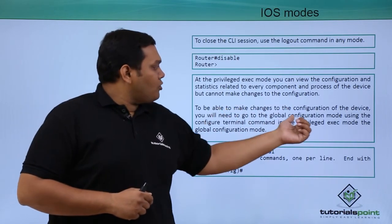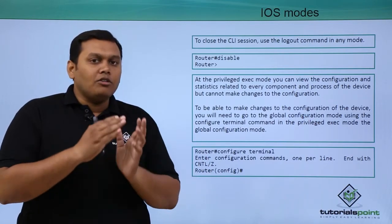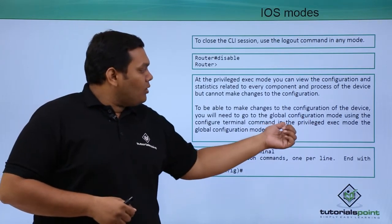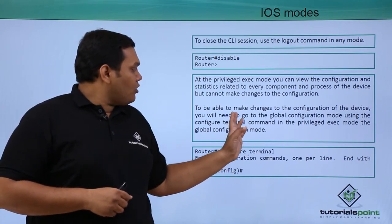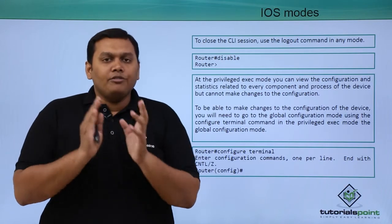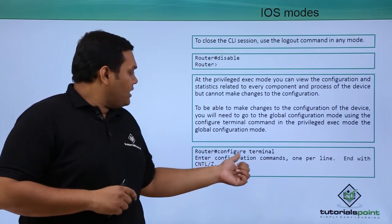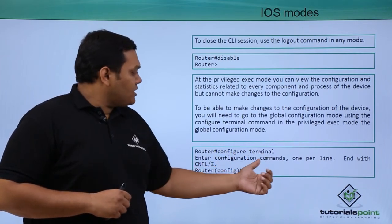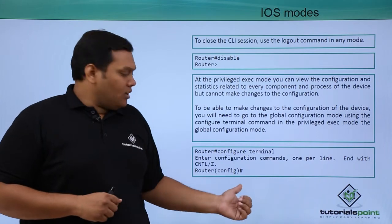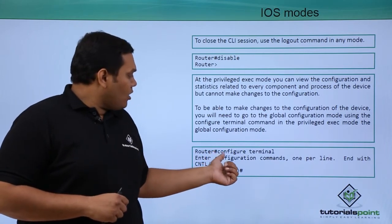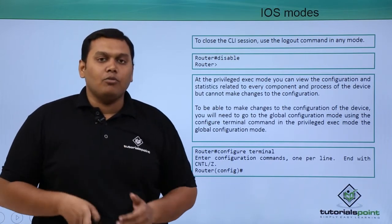If you want to make changes to the configuration of the device, you need to go into the global configuration mode. The global configuration mode is accessed using the 'configure terminal' command and can only be entered from privileged mode. When you enter 'configure terminal,' you can see clearly in the bracket that it is in the configuration mode.